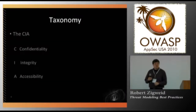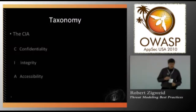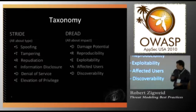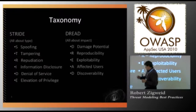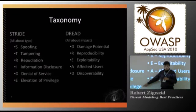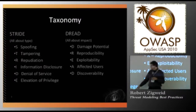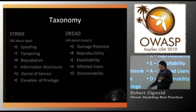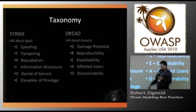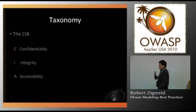Any CISSPs out there might have recognized these three little letters. The CIA is what I like to call them — it's actually the terminology that I prefer. If you look back at the STRIDE model, I feel most of these fall under elevation of privilege. Information disclosure is an elevation of privilege because you're getting access to information you weren't supposed to have. Tampering is definitely an elevation of privilege because you're doing something you weren't supposed to do. But it can really be boiled down to these basic three tenants.